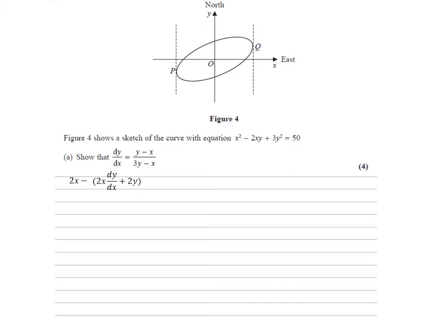We've then got the differential of 3y squared. Differentiating y with respect to x, we end up with 6y - the power of 2 has come down to multiply by the 3 - and we've got dy by dx on the end. This is all equal to the differential of 50, so it's equal to 0.